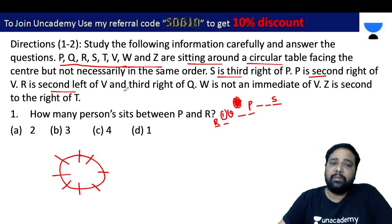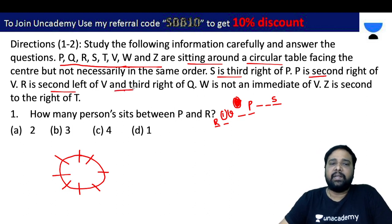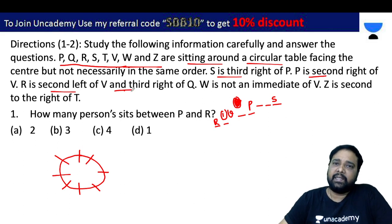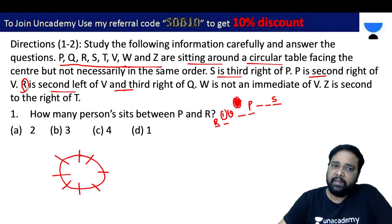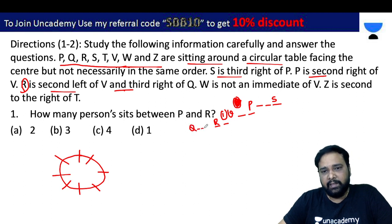And A is third right of P. R is third right of Q. So Q is positioned accordingly relative to P and R.